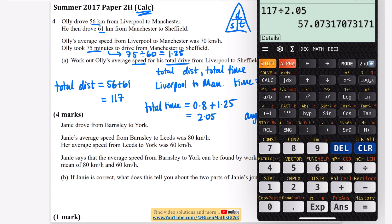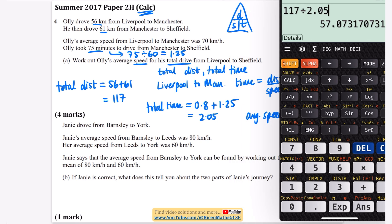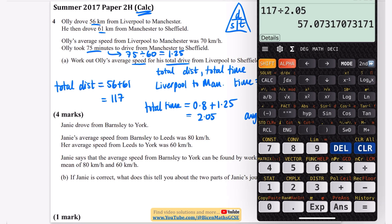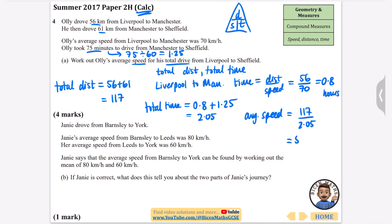117 divided by 2.05 gives 57.1 kilometres per hour to one decimal place. The key point here is that total distance and total time both need to be calculated separately before dividing.